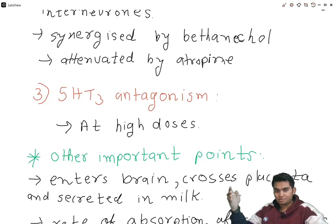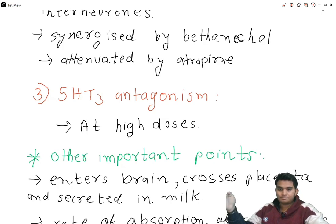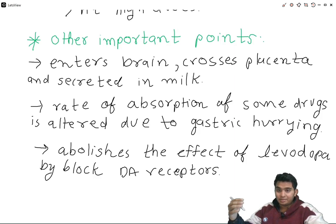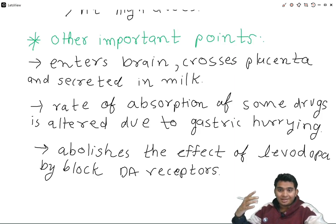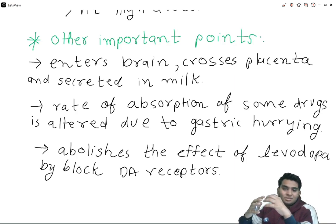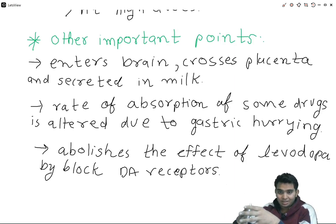At high doses, metoclopramide also antagonizes the 5-HT3 receptor. It enters the brain, crosses the placenta, and is also secreted in milk. By increasing the rate of gastric emptying, it alters the rate of absorption of some drugs such as aspirin. It also abolishes the effect of levodopa by blocking dopamine receptors, mainly in the basal ganglia.